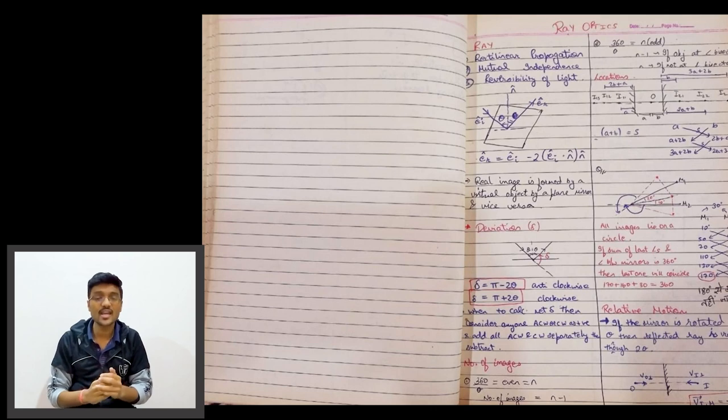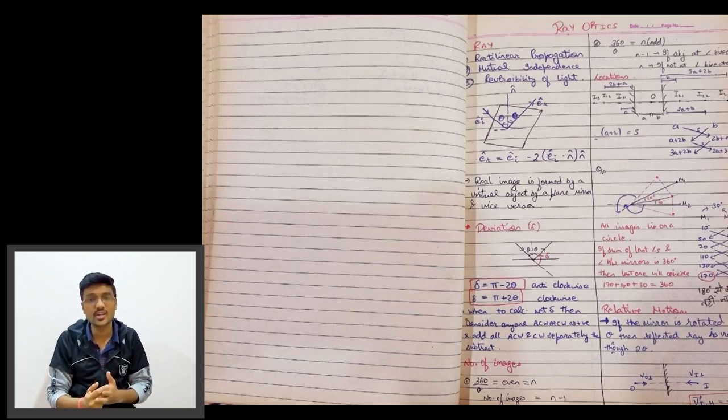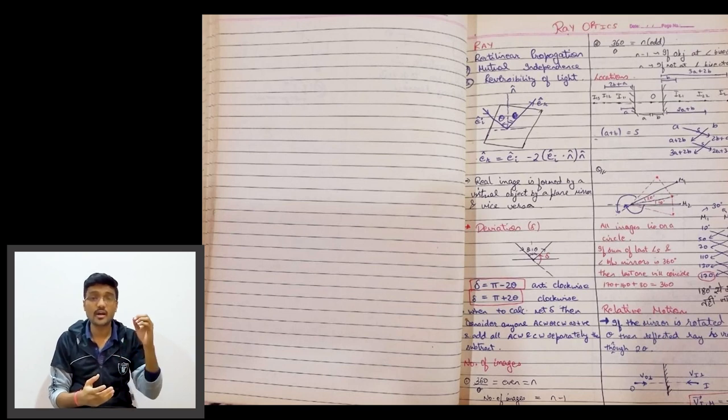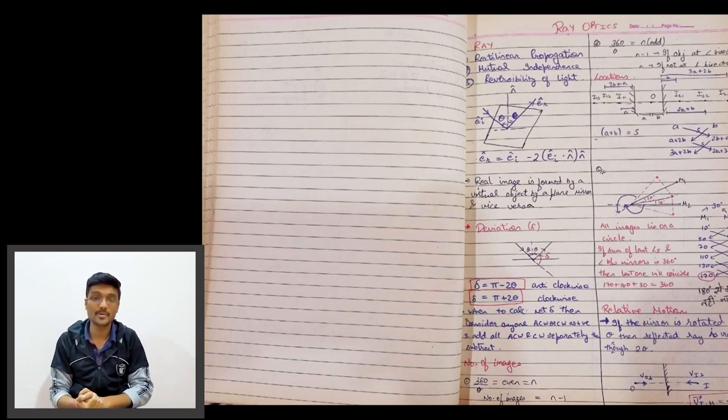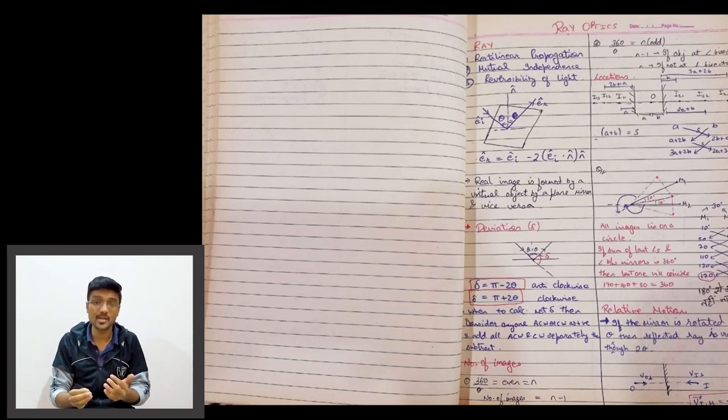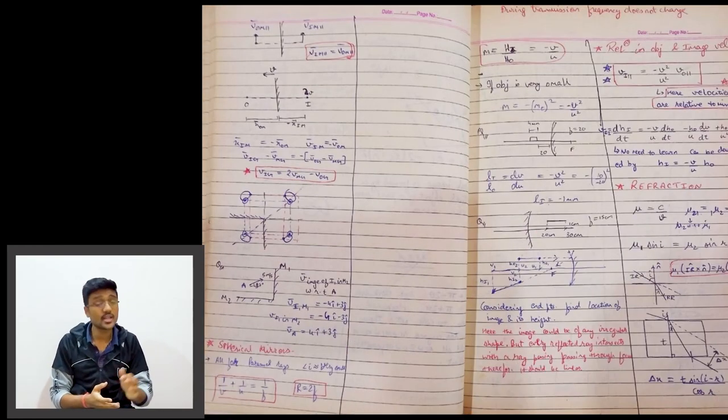I would further suggest that you use different colored inks so that things are not monotonous and when you revise, you will enjoy the flow. Further, in the first page I have mirrors and relation between object and image velocity in plane mirrors mentioned. Then in the next page I have curved surface.